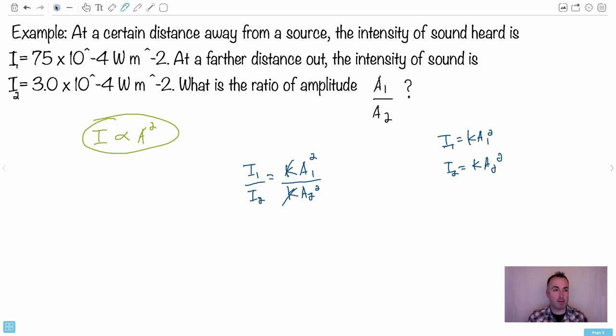Now I can put in my numbers. I've got 75×10⁻⁴ and 30×10⁻⁴, all that equals A₁/A₂. And since they're both squared I can say the whole thing squared. Good news: they're both times 10⁻⁴ so that cancels out. So you just got to think what's 75 divided by 3? Well it's just 25. So I have 25 = (A₁/A₂)².